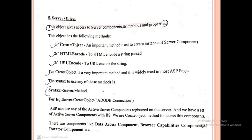The Server object has the following methods: CreateObject, which is an important method used to create an instance of a server component; HTMLEncode, which HTML-encodes a string; and URLEncode, which URL-encodes a string. The CreateObject method is very important and widely used in most ASP pages.